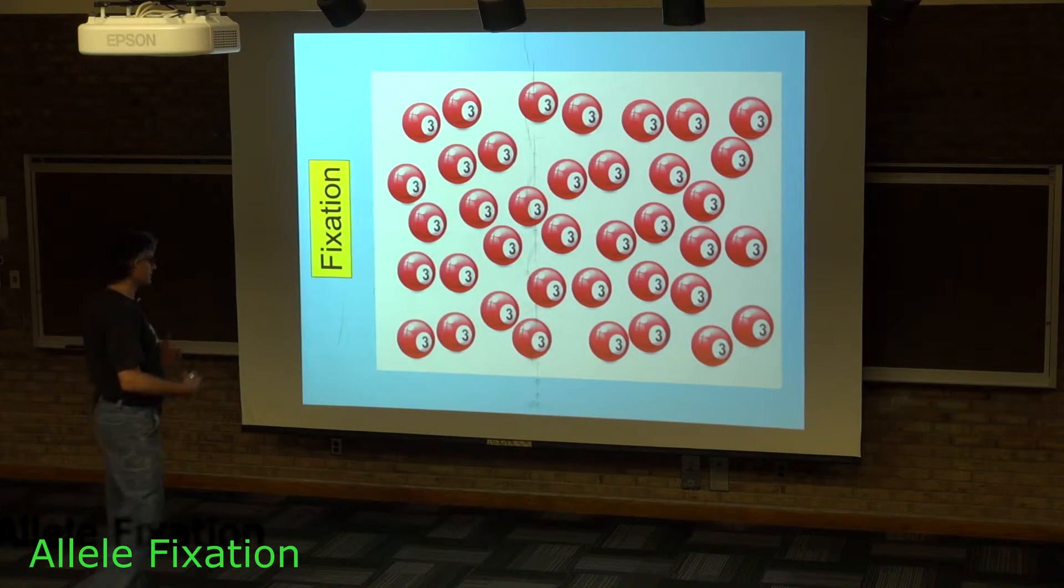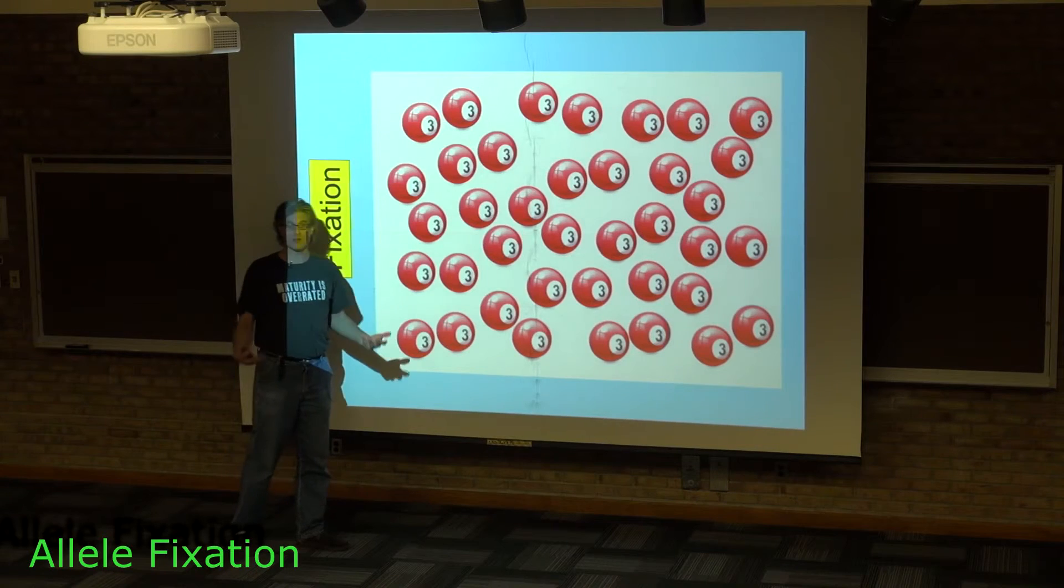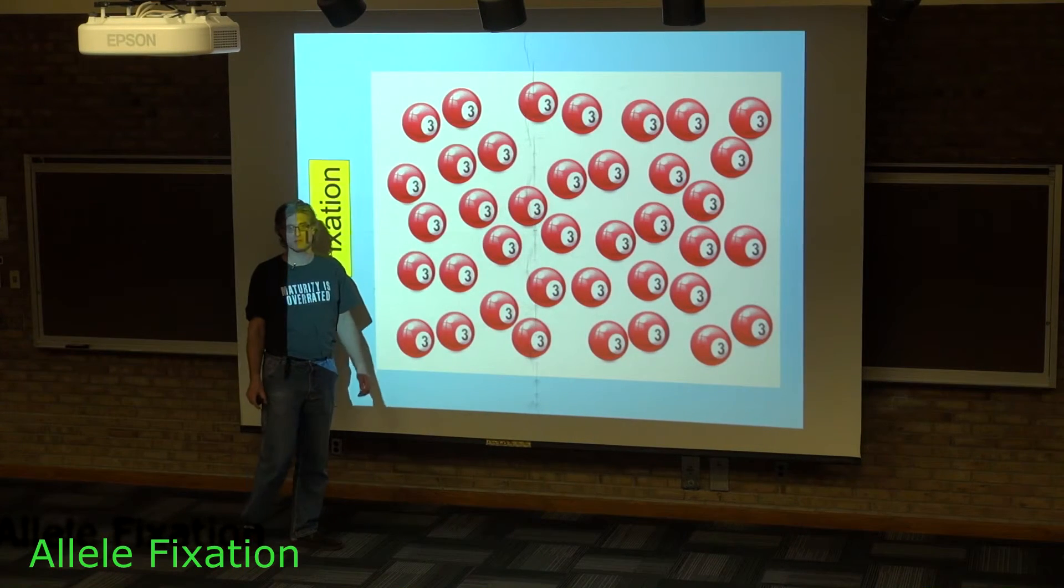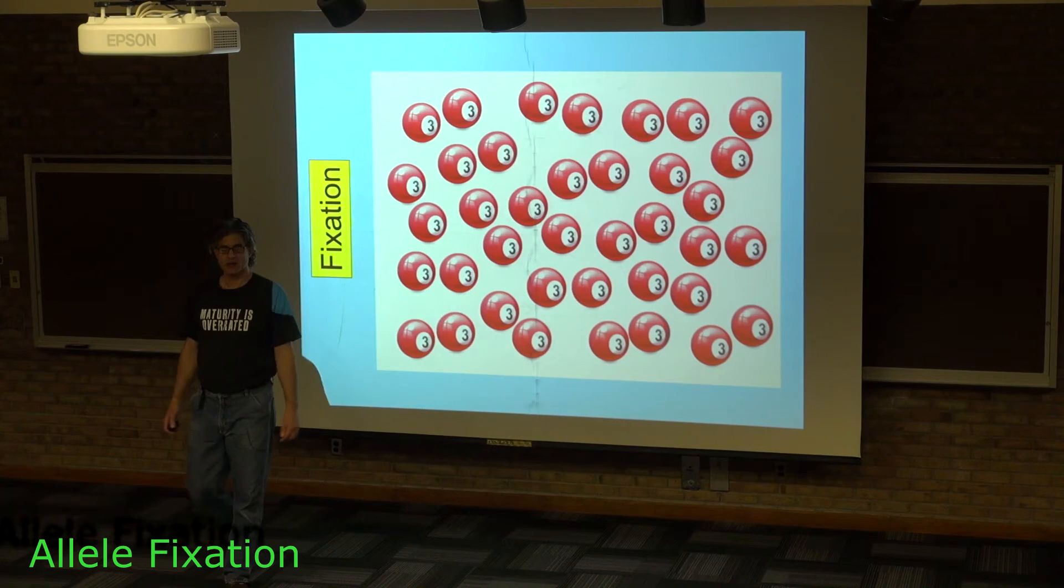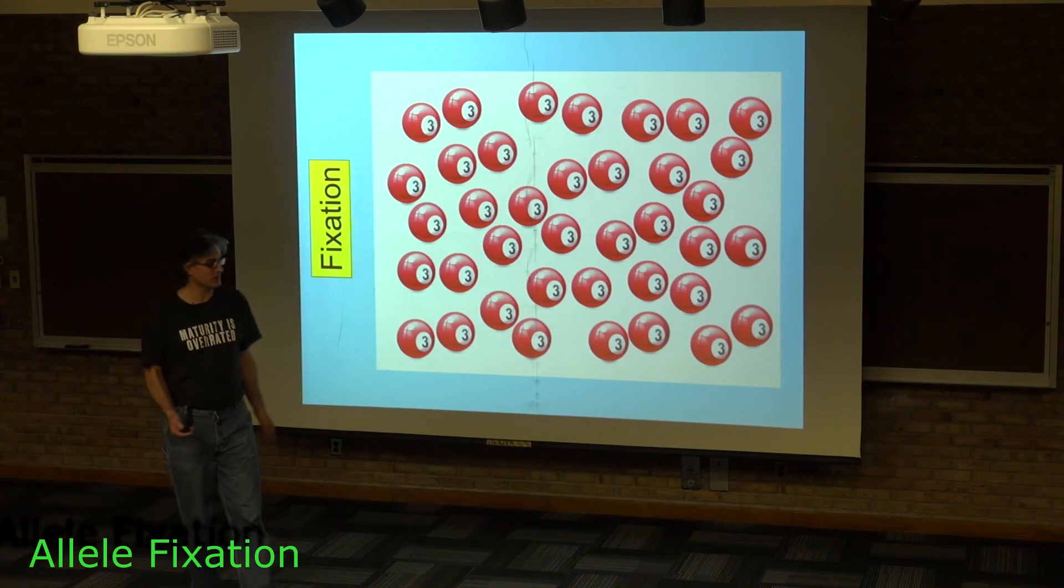And that's to imply that, in fact, among the pool ball locus, the red 3 allele has become fixed within the population. That is a representation of a lack of genetic variation within this population.